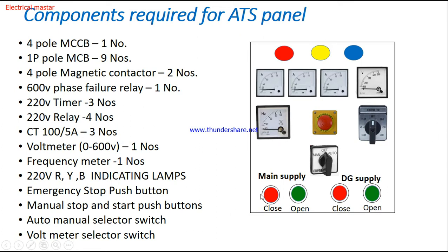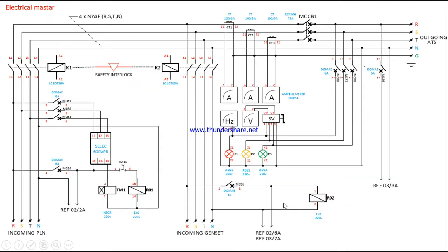Now let's look at the ATS panel wiring diagram. First I will explain the power diagram, then the control diagram. The incoming from the electricity board is connected to contactor K1, and the incoming from the diesel generator is connected to contactor K2. Whenever the K1 magnetic contactor is energized, it supplies directly to the load breaker.